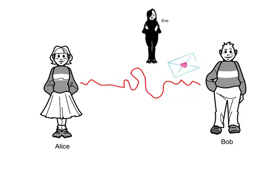So Bob sends his letter over the Internet, not suspecting that Eve is watching, though he should know better. By the time the message reaches Alice, Eve has read it too, with nefarious consequences.